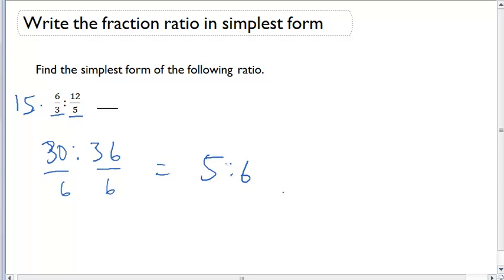So the ratio of 6 over 3 to 12 over 5 in simplest form is going to be 5 to 6.